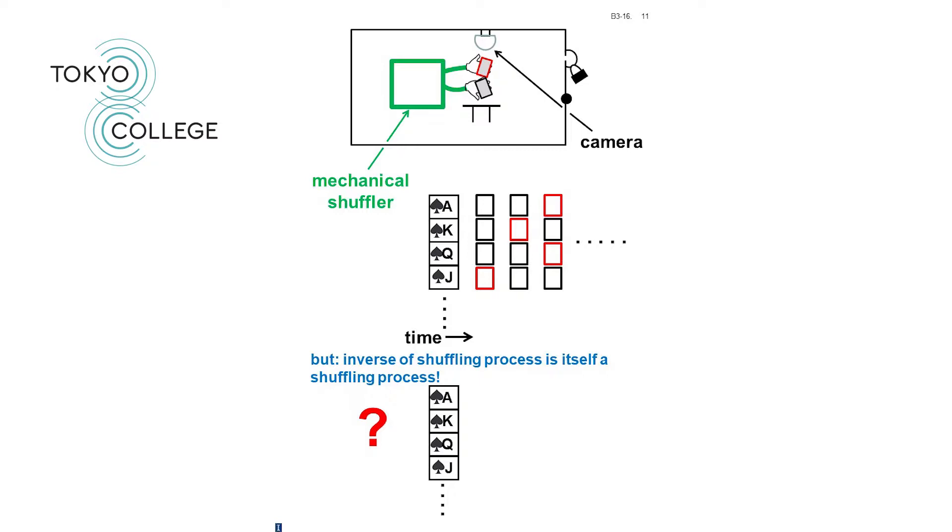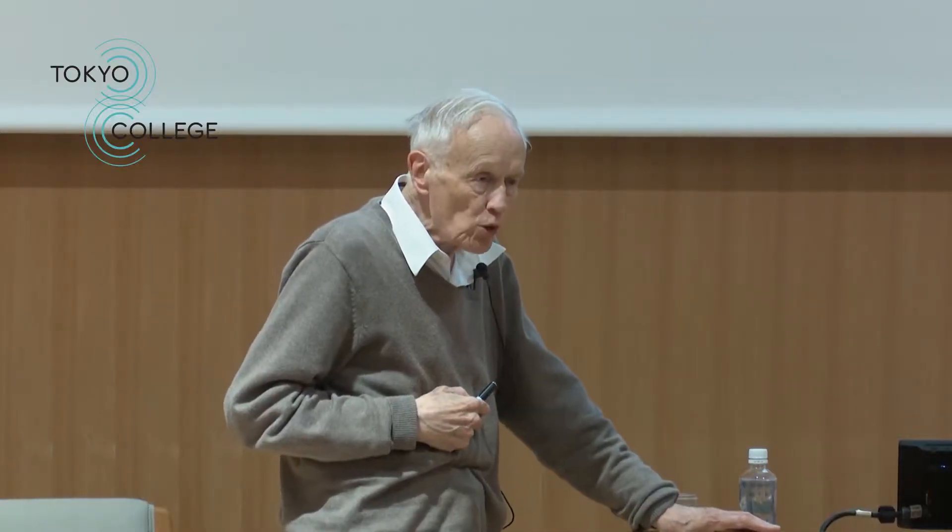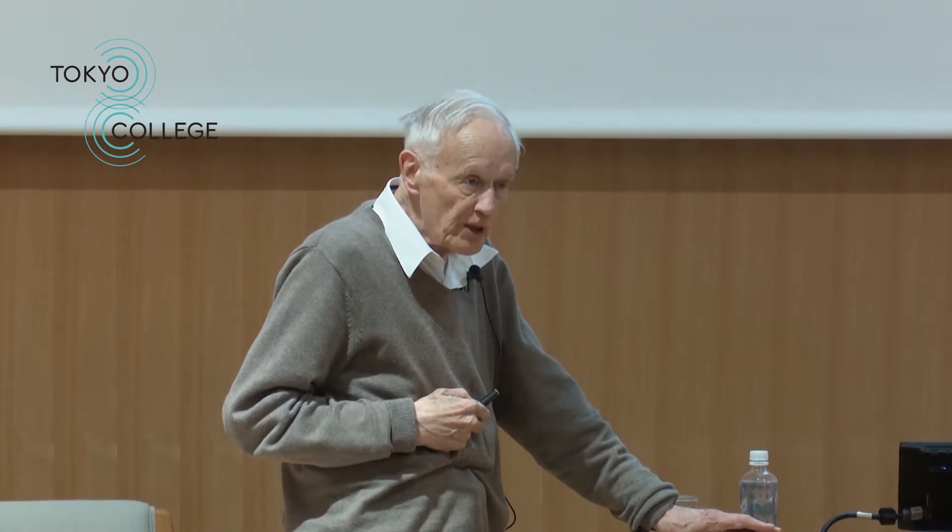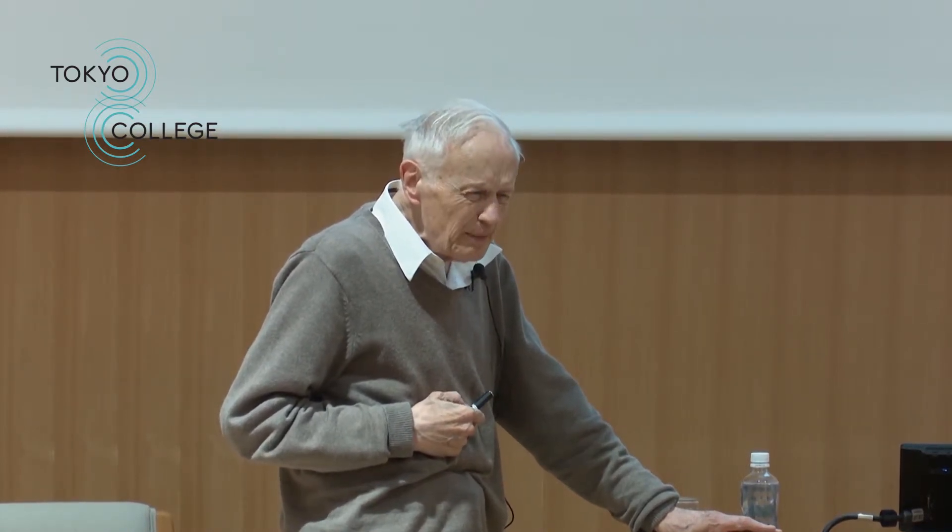So at first sight, it's very tempting to think that the direction of time has something to do with the fact that we human beings can prepare a deck like this, but we cannot, as it were, retro-pair it. In other words, we cannot, in fact, arrange things so that after a certain time, we'll automatically get this perfectly ordered situation. That's sometimes called retro-pairing, and this is something we know we cannot do. But then it doesn't really seem that plausible to associate the direction of time with what we humans can and cannot do.